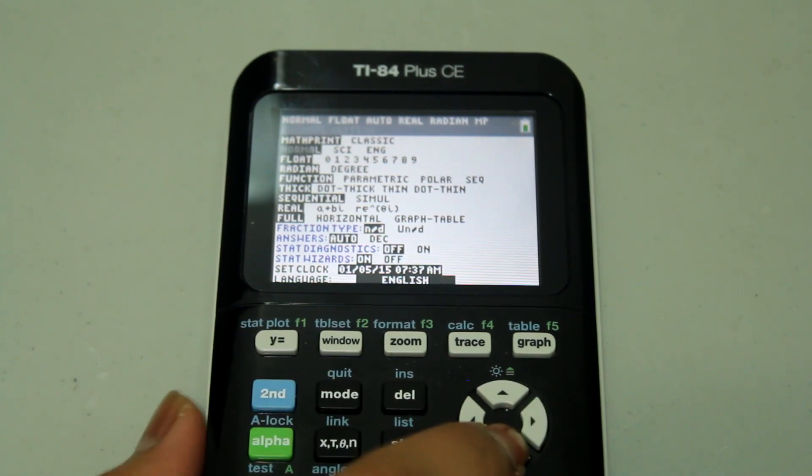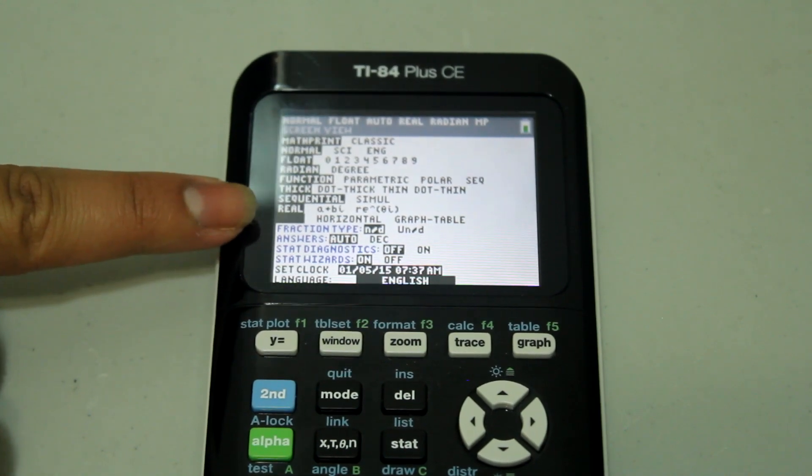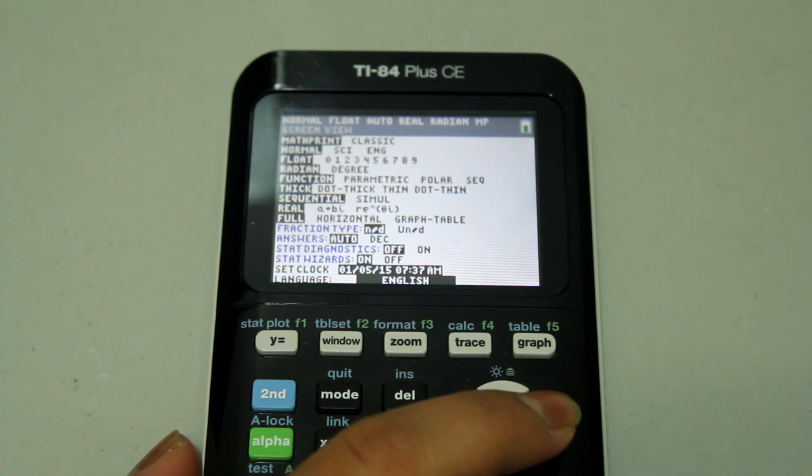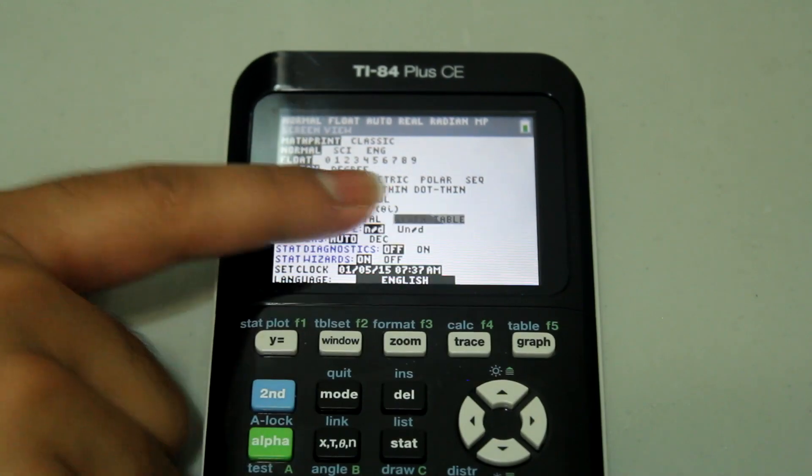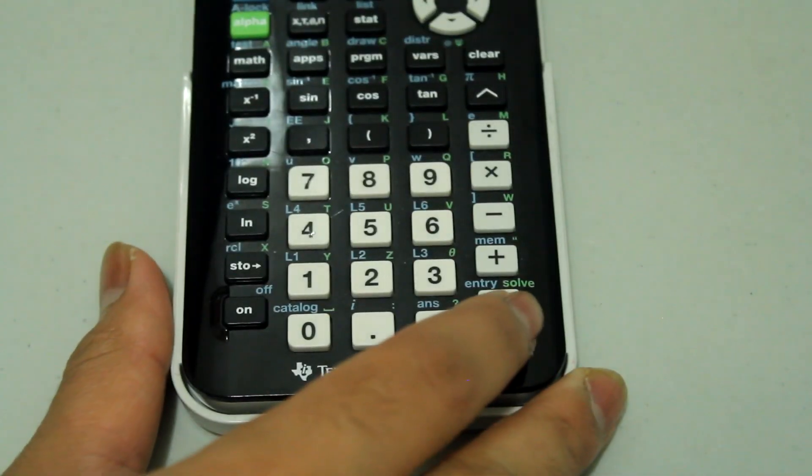Then arrow down to the row that starts with the option full, arrow right all the way and it should say graph-table, and then press enter.